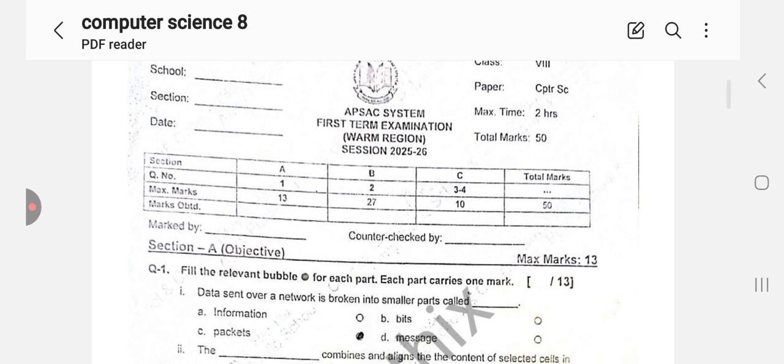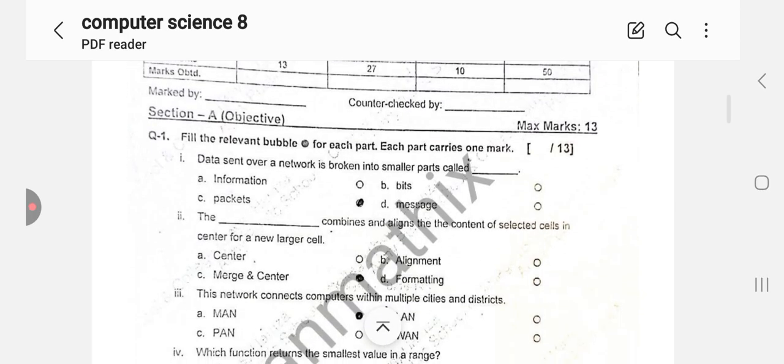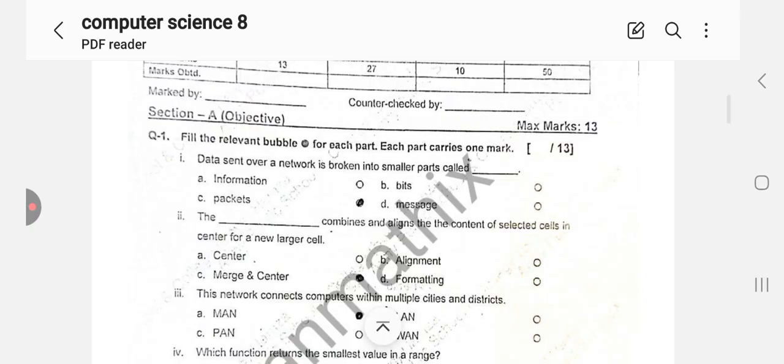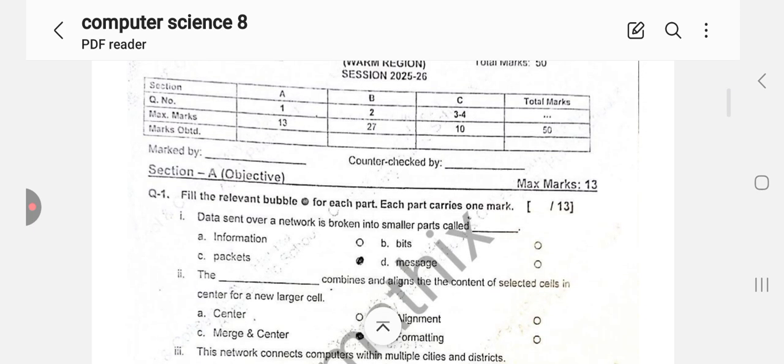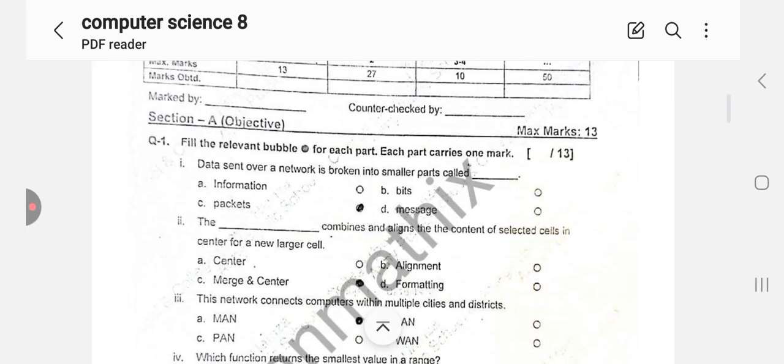Section A objective portion, question number one: fill in the relevant bubble for each part. Each part carries one mark. You have 13 MCQs and 13 marks, meaning one mark each.